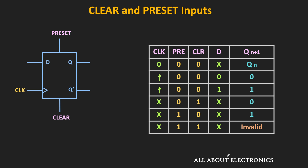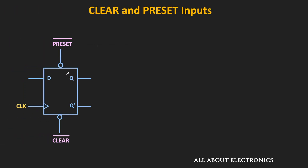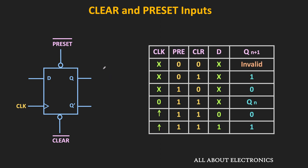Here we have assumed that both preset and clear inputs are active high. But similarly, these inputs can be active low also. The bubble on the symbol represents that the preset and clear inputs are active low. Active low means when these inputs are low, they will become active, and whenever these inputs are high, they will be disabled. Let us now see the truth table when both preset and clear inputs are active low.